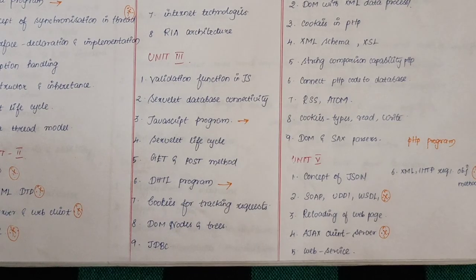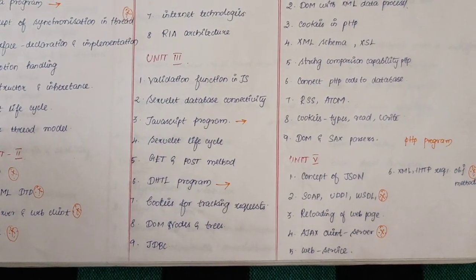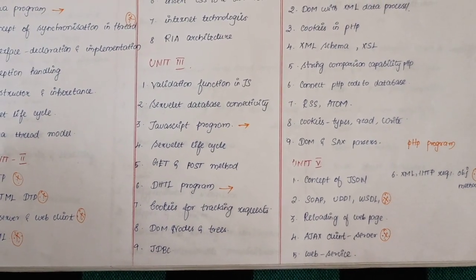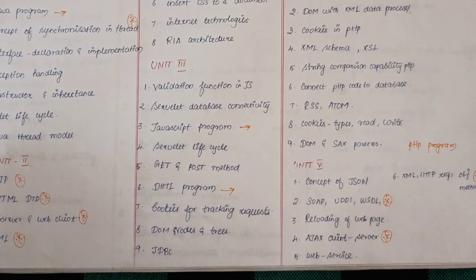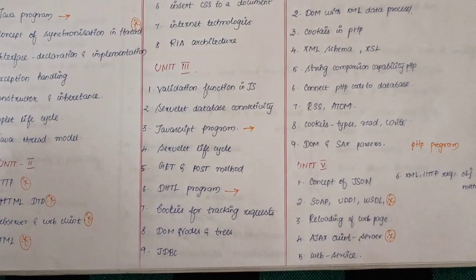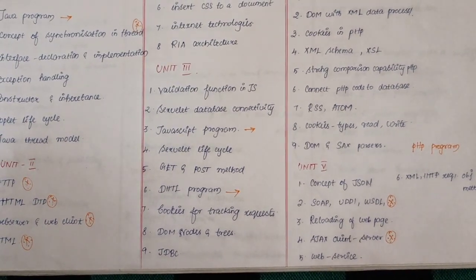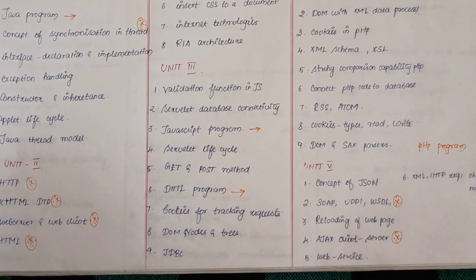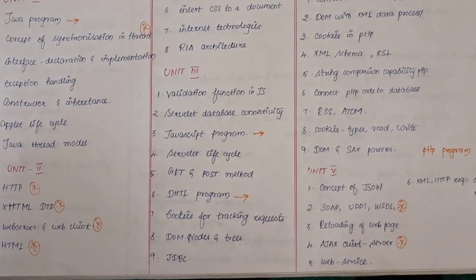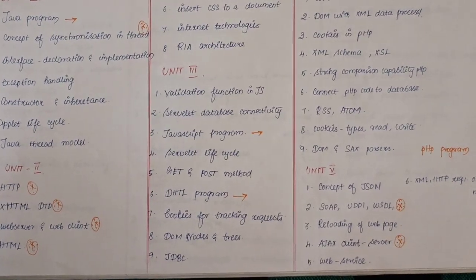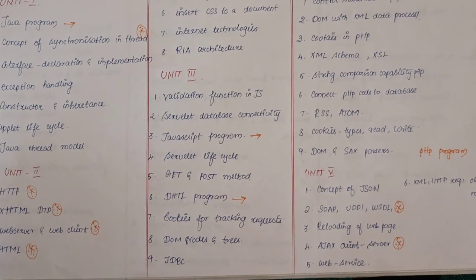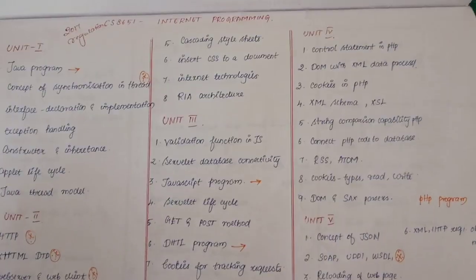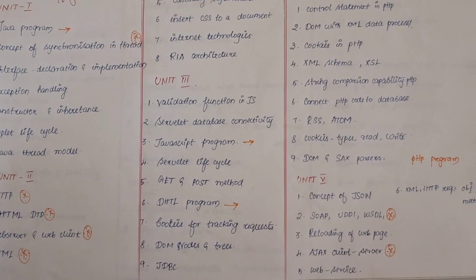Unit 3 — Validation Function in JavaScript, Servlet Database Connectivity, JavaScript Program. Unit 1 Java Program, Unit 3 JavaScript Program. Servlet Lifecycle, Get and Post Method, DHTML Program, Cookies for Tracking Request, DOM Notes Entries, JDBC. This is Unit 3.